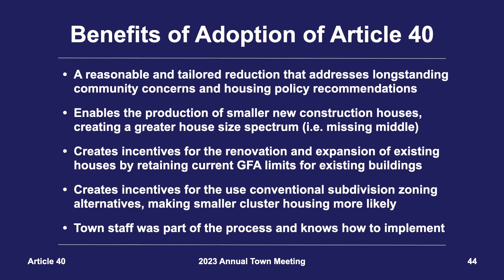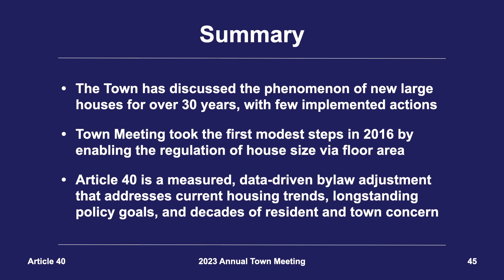In conclusion, this article represents a reasonable and tailored approach to adjusting the regulation of the size of houses, which represents an important step forward in addressing consistent resident concern over decades and making progress on long-standing policy goals. It would enable the production of smaller new construction houses, creating a greater spectrum of house size than what we see today. It will create incentives for the renovation and expansion of existing houses in established neighborhoods by retaining current GFA limits for these properties. It would create significant incentives for conventional subdivision alternatives. Town staff has been part of the process and knows how to implement the bylaw if adopted. Article 40 represents the culmination of hundreds of hours of work over several years and has been analyzed, modeled, and vetted and is ready for your consideration tonight.